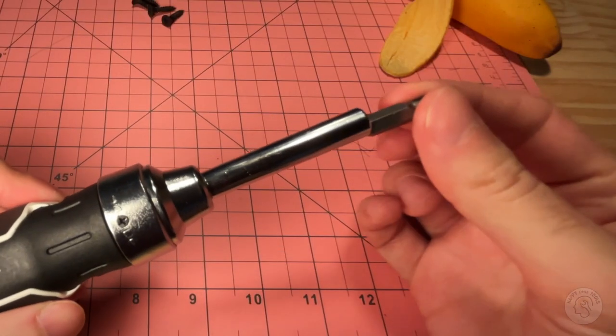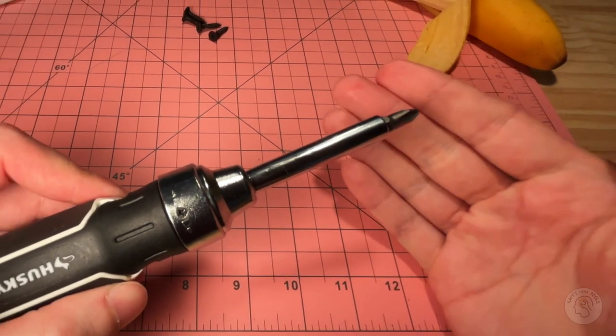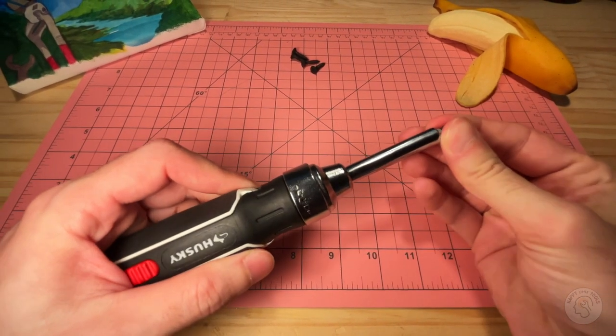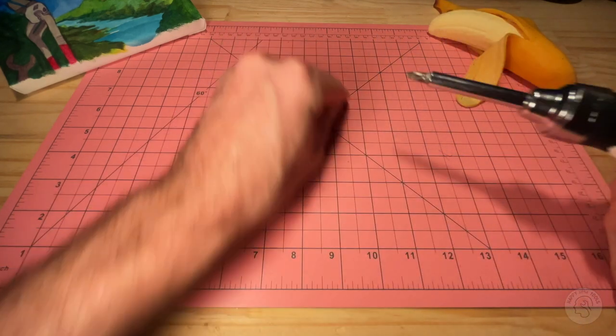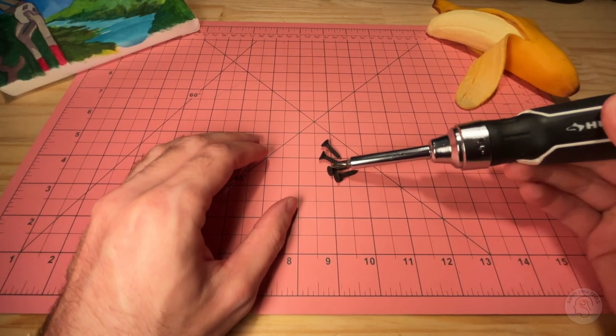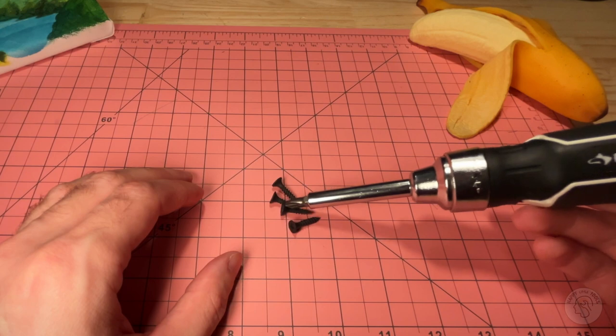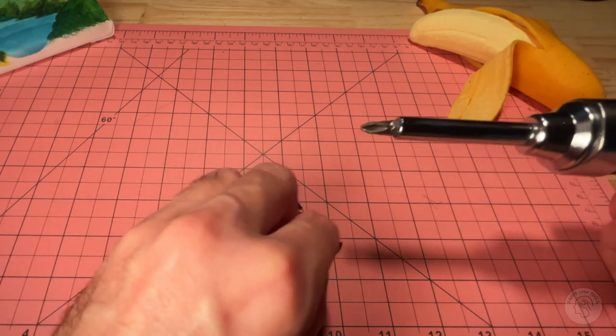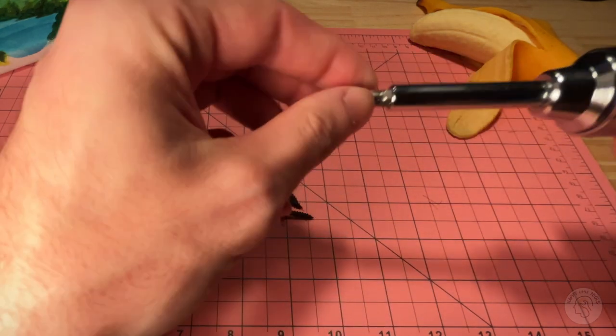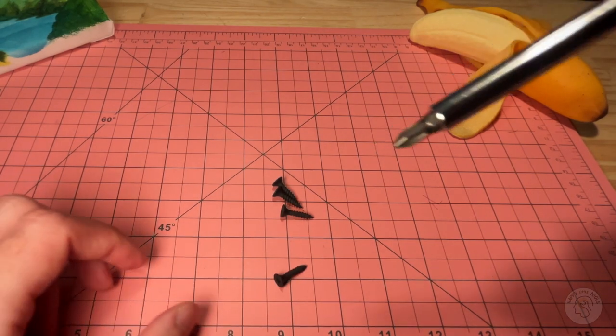So the bits are held in place by magnets and it holds fairly strongly. Unfortunately the magnetism doesn't really transfer very well to the bits. You can kind of see it does get it, but if we do our little test here it falls off.